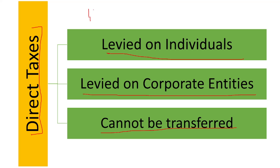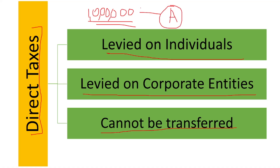For example, if my income is 10 lakh, assume that my income is 10 lakh. So this 10 lakh is earned by me. I am person A and I have earned this 10 lakh money as my income, so I should only pay the tax. I cannot say that some other person will pay the tax for my income. So this direct tax cannot be transferred.